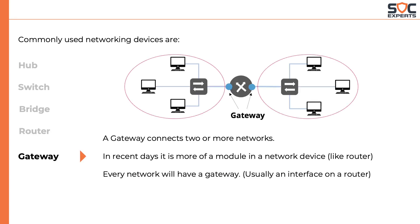Next we have the Gateway. A gateway connects two or more networks. In recent days, it is more of a module in a network rather than a hardware device. Every network will have a gateway, and this is typically the interface on a router.